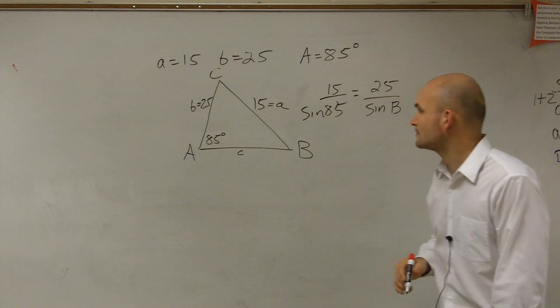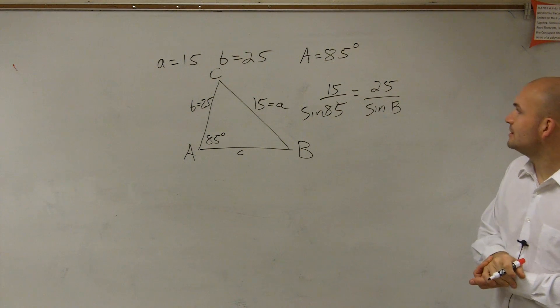I didn't add the sines. So we have 15 over the sine of A, or sine of 85 degrees, equals 25 over the sine of B.